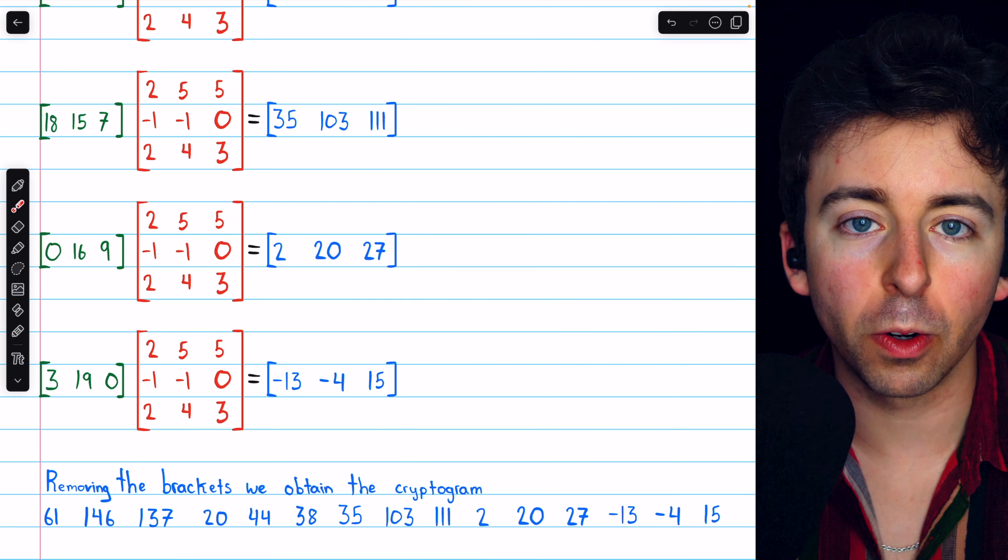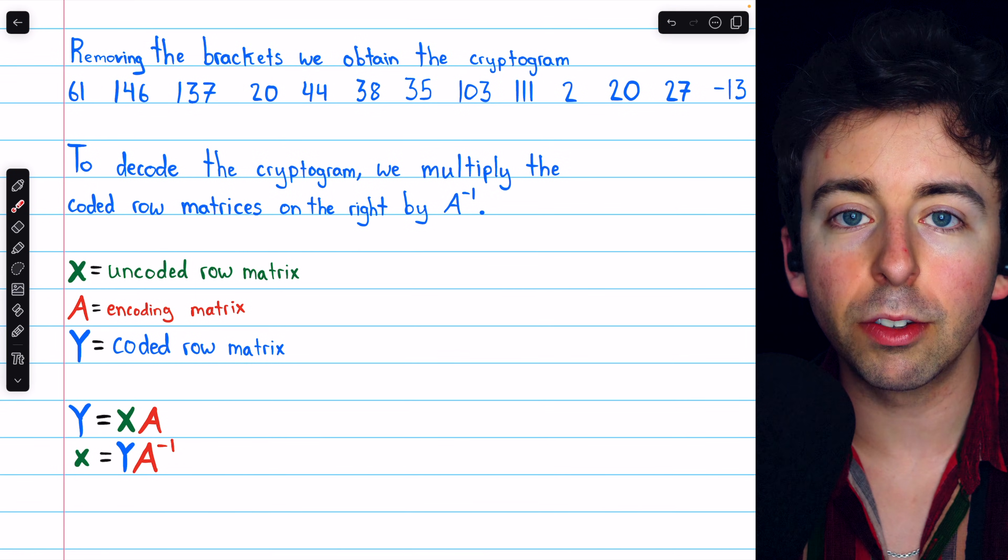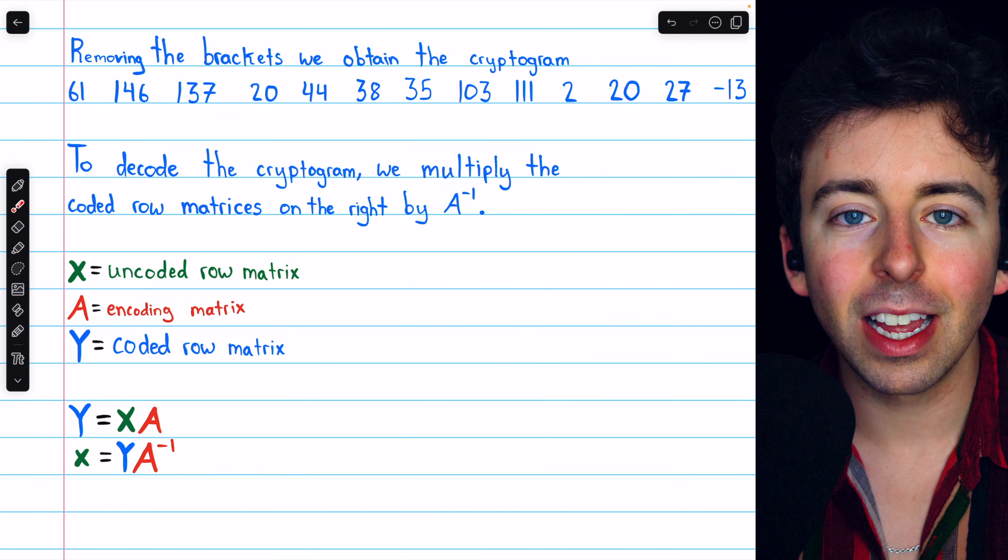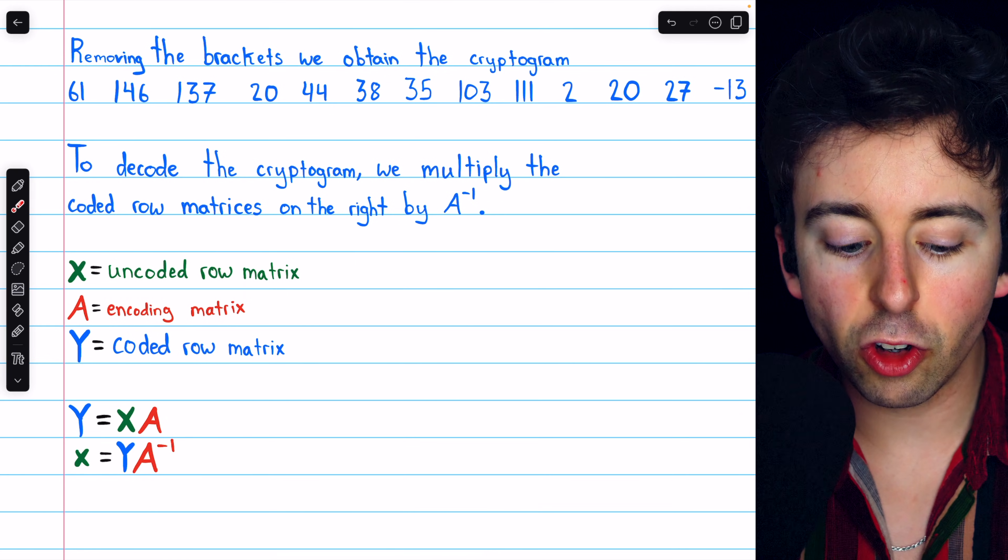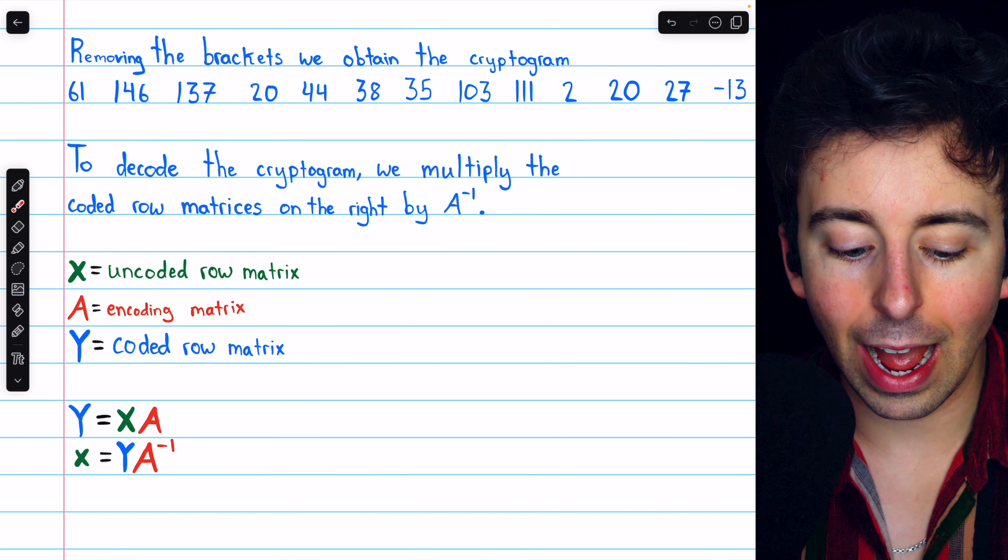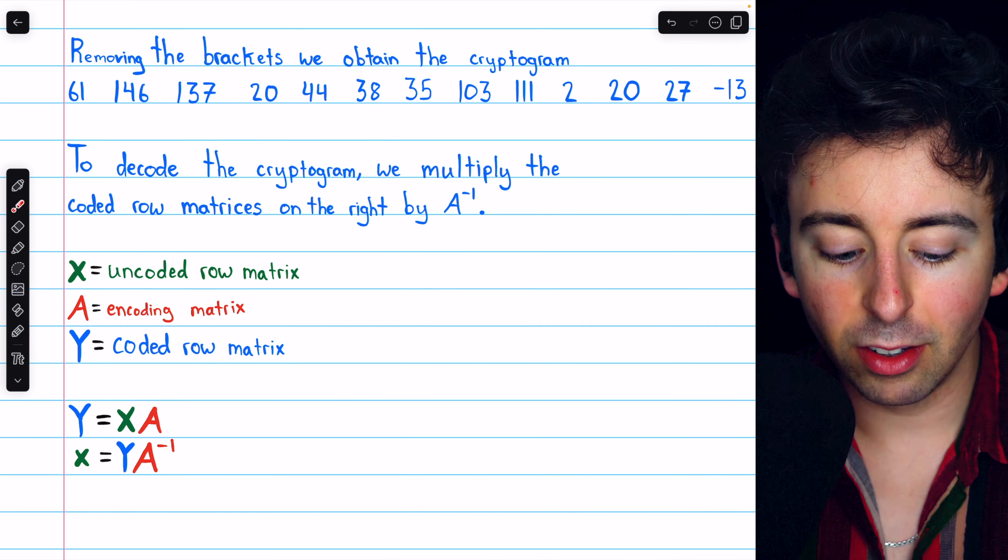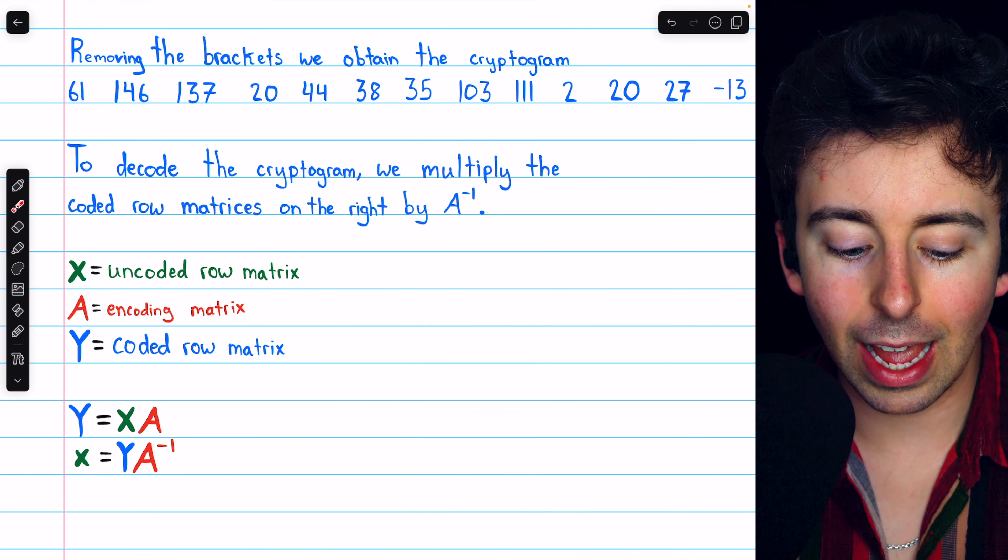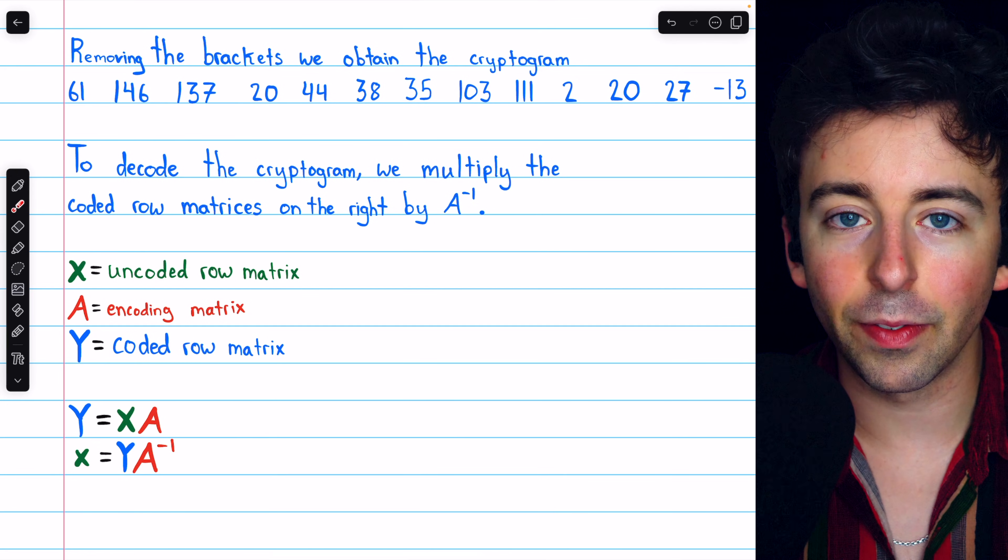To decode the cryptogram, all we need to do is multiply each coded row on the right by A inverse. That will undo the encoding. This works, of course, because each coded row matrix Y is equal to X times A, where X represents an uncoded row, and A represents the encoded matrix. So if we multiply that Y on the right by A inverse, it would cancel out with A and just leave the original uncoded row behind. So let's give it a try.